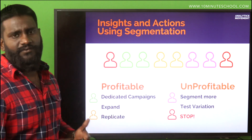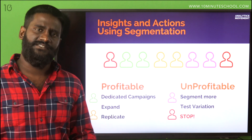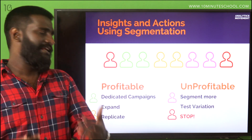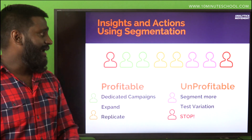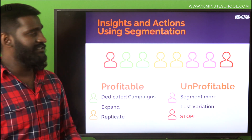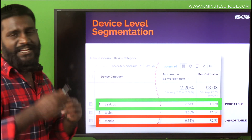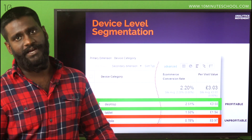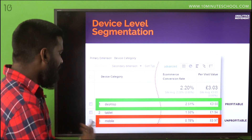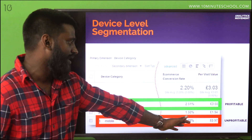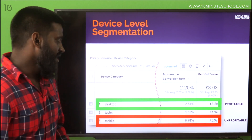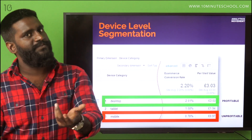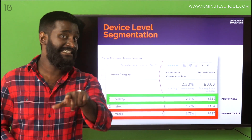There are only two segments you can make for any business: profitable segment and unprofitable segment. For a profitable segment, you can dedicate more campaigns, expand, and replicate. For unprofitable segments, you can test a variation or segment more. Go inside mobile and see what devices are performing less or higher. For example, Apple might be converting better, or Samsung might be converting better. If a device is performing very low, maybe your website is not optimized for that — and that's something you need to fix. That's an insight.